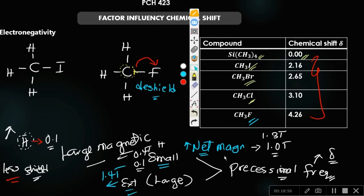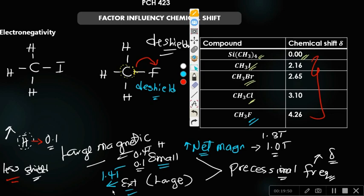An electronegative atom deshields a proton by removing the electrons around it, thereby reducing the small magnetic field around it. This phenomenon is called deshielding. So when a proton is deshielded, the chemical shift value will be high, because they have removed the shield. The more they remove the shield, the more the external magnetic field is felt, which increases precessional frequency and thus increases chemical shift.